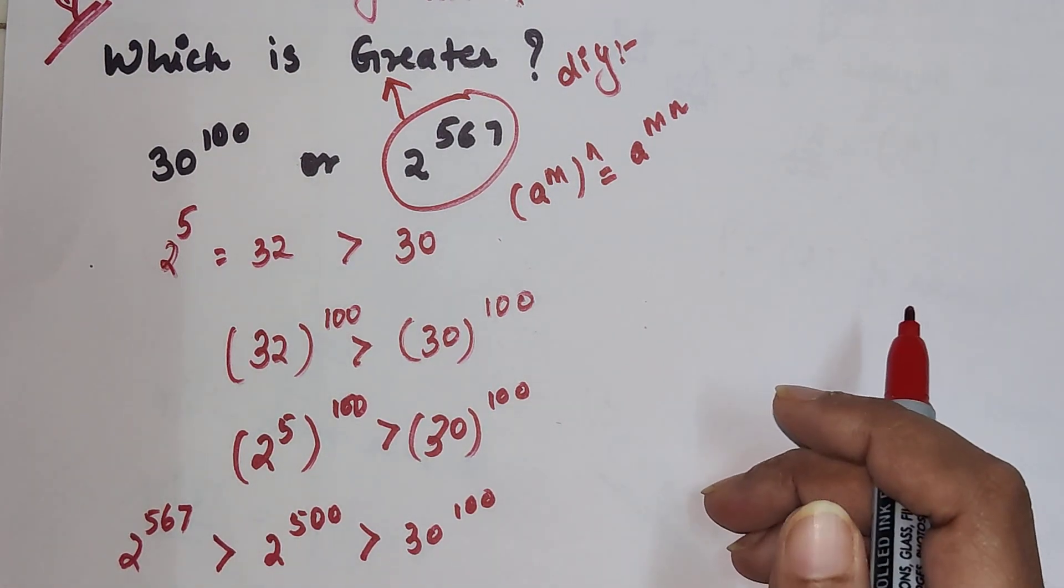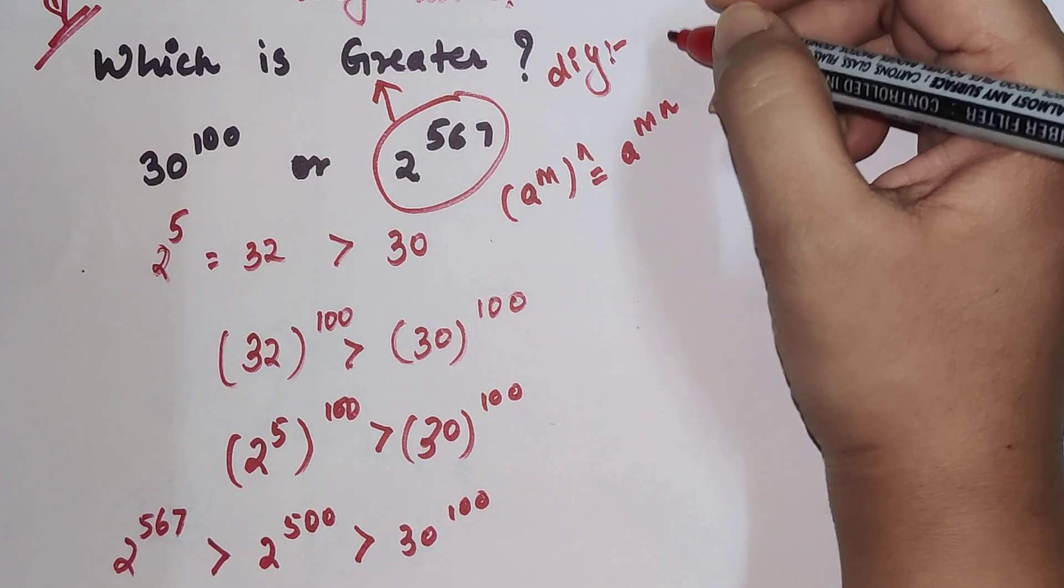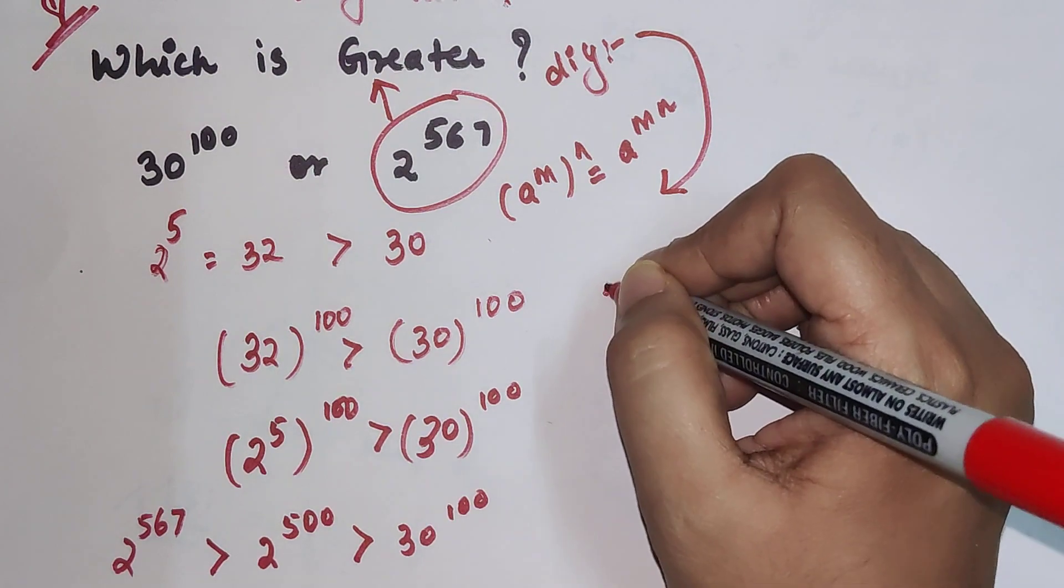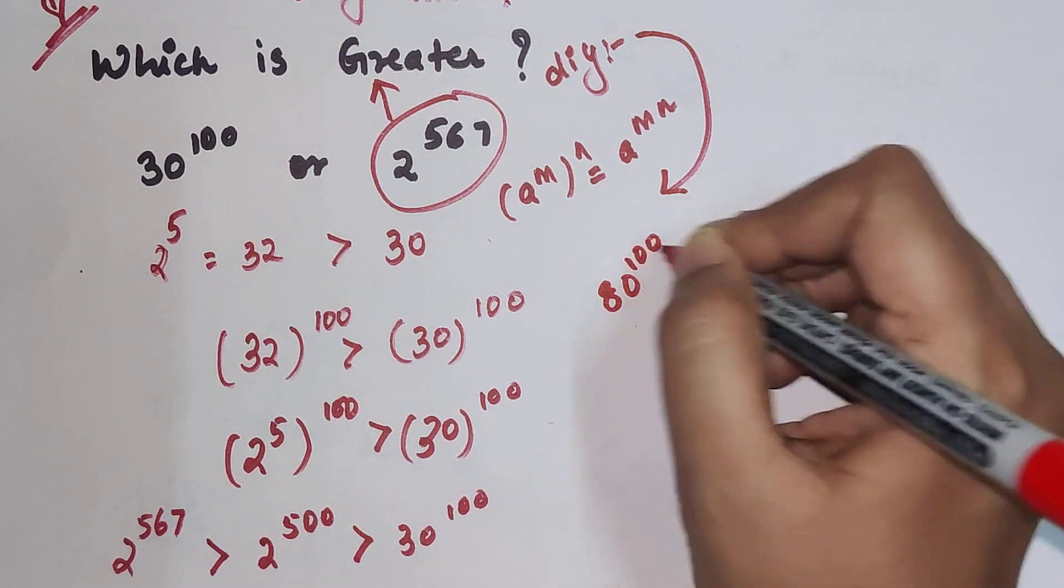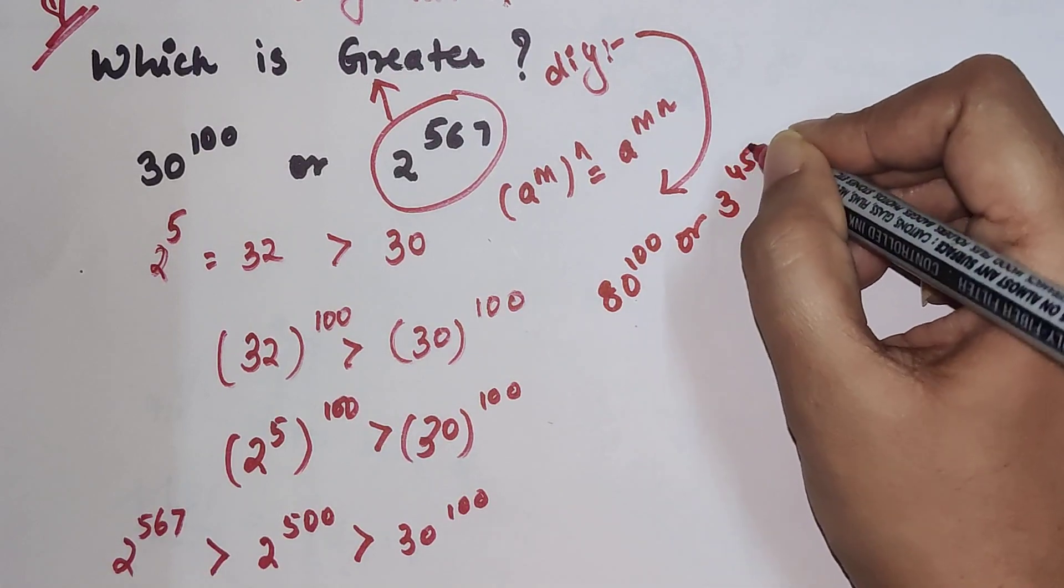So now time for your DIY. You will have to tell me which is greater: 80 raised to 100 or 3 raised to 450.